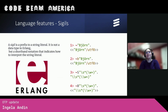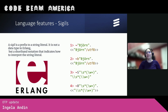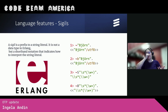We also introduced some new sigils to facilitate writing documentation strings. You can see example one and two here — we have binaries that are UTF-8 encoded by default. Example three and four show that you can have the output as a list of characters or a binary, and you don't have to use verbose escaping. If you want to know more details about these sigils, please have a look at our user guide.